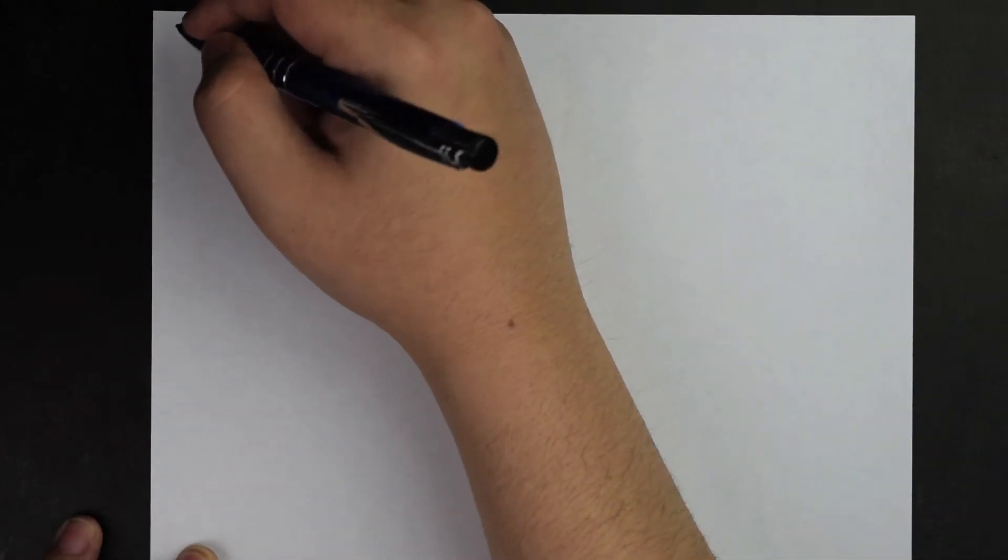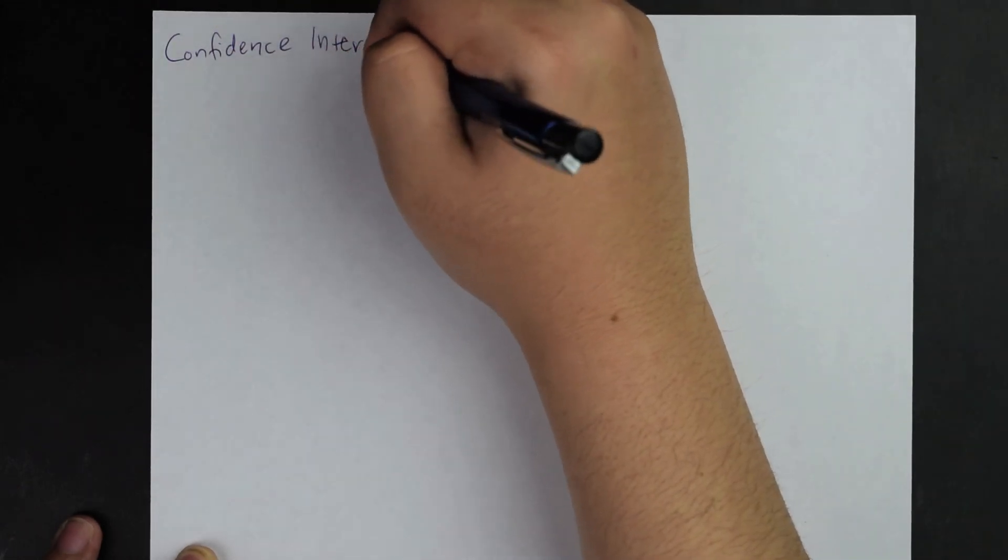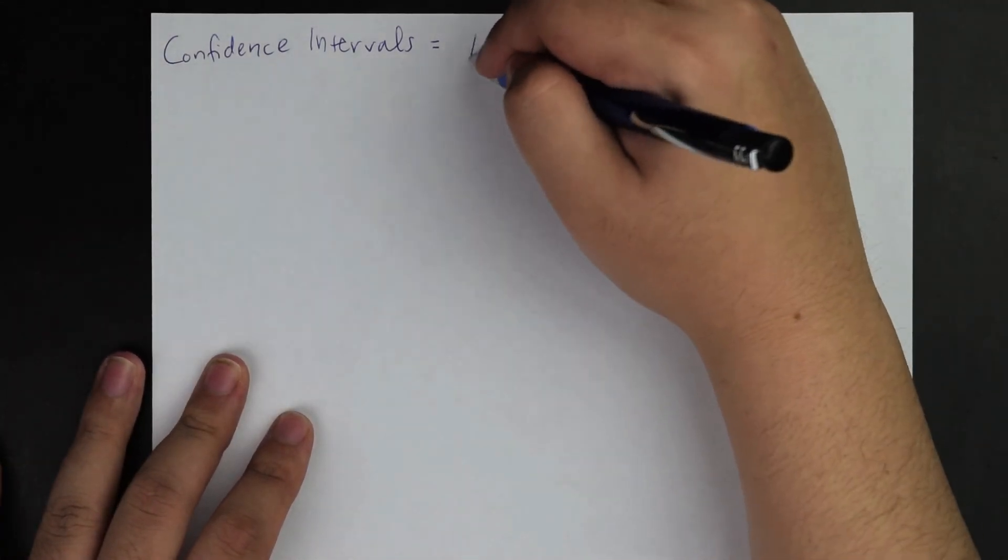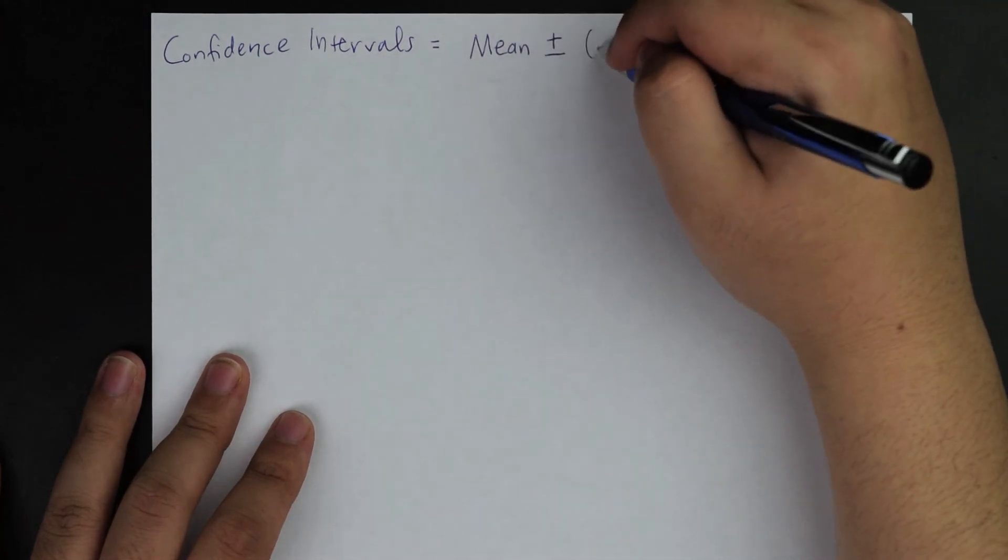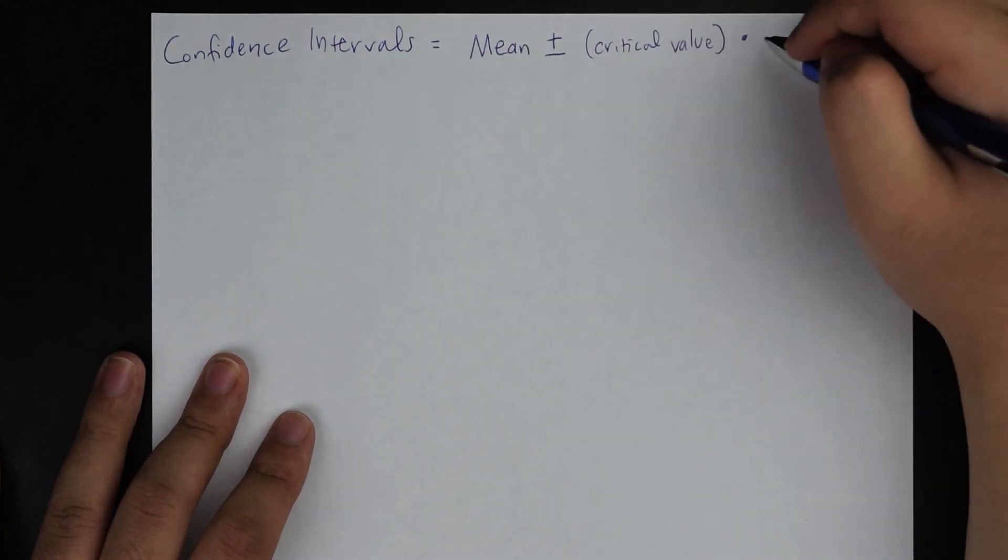When we talk about confidence intervals, you have to understand that confidence intervals—the equation bank that's provided to you on the AP exam states statistic plus or minus the critical value times the standard deviation. For me, at least what I usually mention to my students is that I state it's usually the mean, which is the statistic, plus or minus your critical value times your standard deviation.